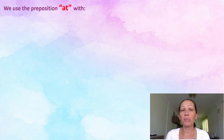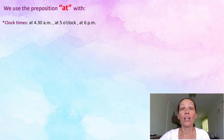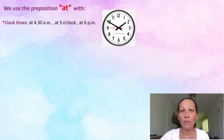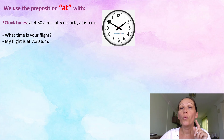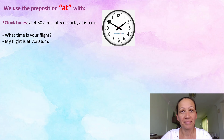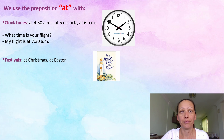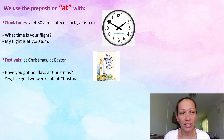Now let's look at examples with the preposition 'at'. We use 'at' with clock time — when we are talking about a specific time. For example: at 4:30am, at 5 o'clock, or at 6pm. When is your flight? My flight is at 7:30am. We also use 'at' when talking about festivals — at Christmas, at Easter. For example: I've got two weeks off at Christmas.